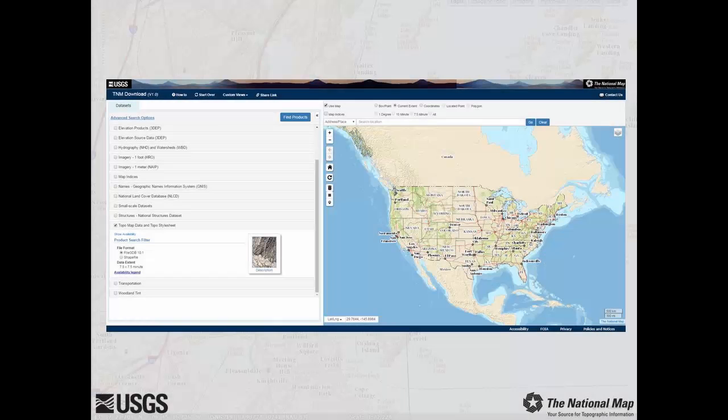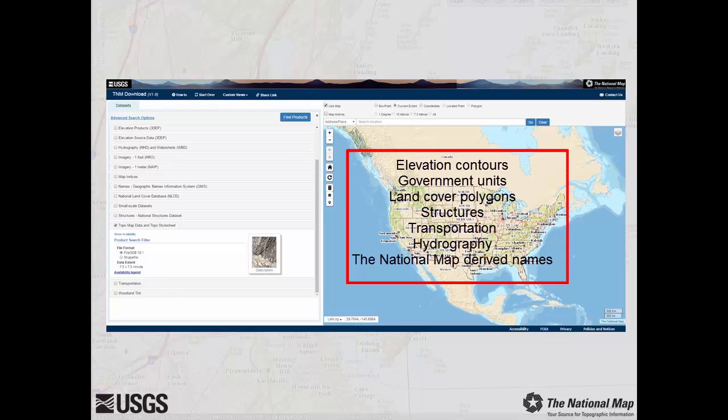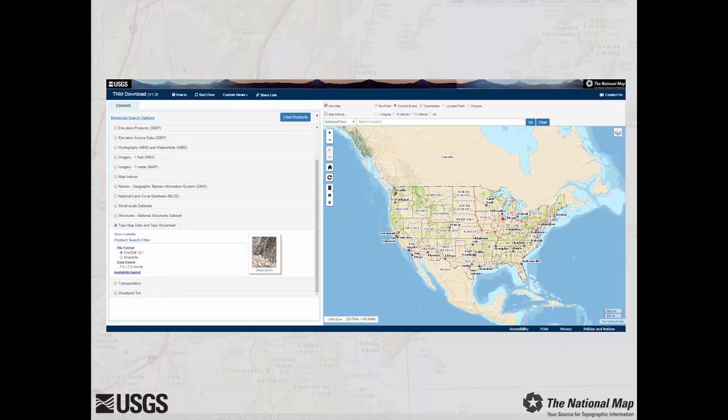These products are staged at 7.5-minute footprint to correspond with the US Topo Map 7.5-minute extent. They contain feature classes from all National Map Vector data themes, including elevation contours, government units, land cover polygons, structures, transportation, hydrography, and National Map derived names. The 7.5-minute map cell feature class is also included. The Topo Map Vector data product is intended for a variety of GIS and cartographic applications, including use with the Topo TNM style template.